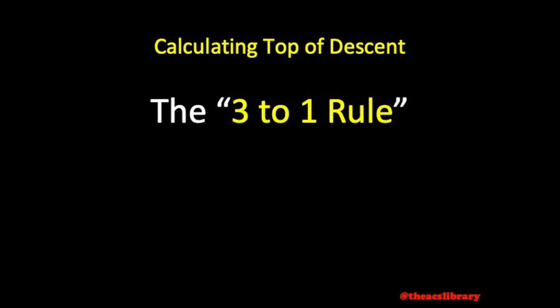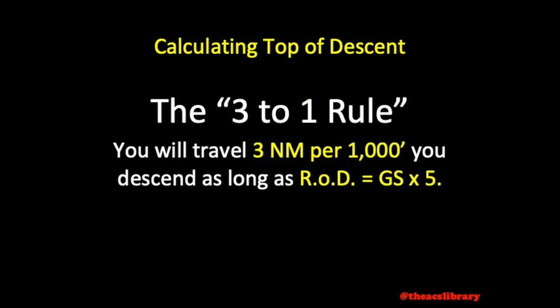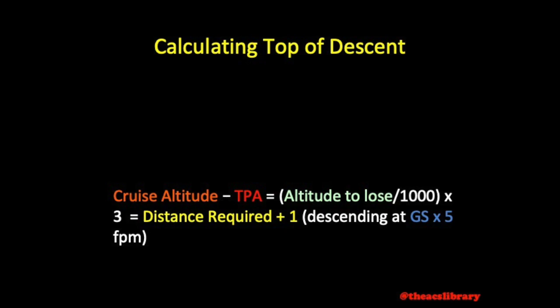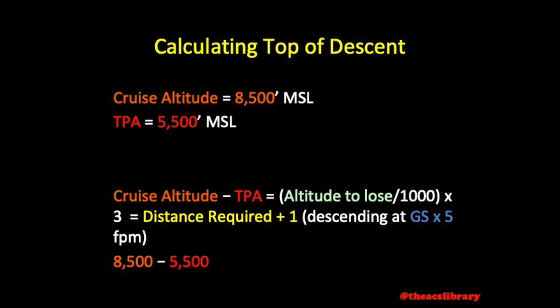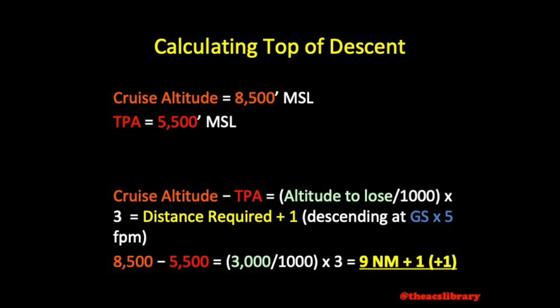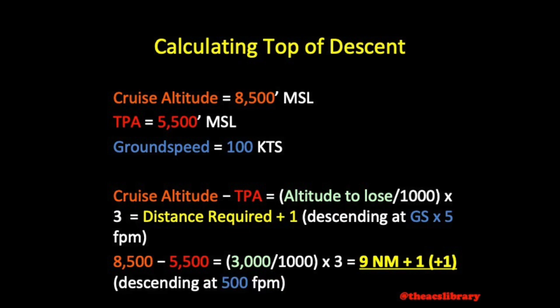Another method would be to use the 3-to-1 rule: you will travel 3 nautical miles for every 1,000 feet you descend, as long as you maintain a rate of descent equal to 5 times your ground speed. Using the formula shown, if we are at 8,500 feet planning to descend to a traffic pattern altitude of 5,500 feet, we have 3,000 feet to descend — dividing by 1,000 and multiplying by 3 gives a distance of 9 nautical miles. We add a mile to intercept the downwind leg, plus one more as a fudge factor, so assuming a ground speed of 100 knots, we start our 500 fpm descent 10 to 11 nautical miles from the airport.